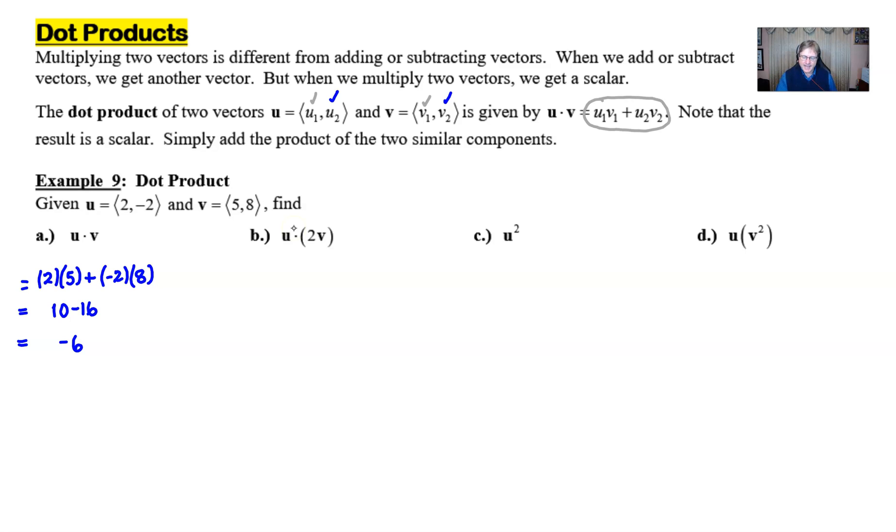Now let's take a look at part b, u dot 2v. When you've got something that's a little bit more complicated like this, I might suggest that we first of all rewrite our vector u in component form, and then just put a dot between it, and then I'm just going to multiply the scalar 2 inside to get (10, 16). Multiply the two x components together, add the result of the product of the two y components. In this case, we have 20 minus 32, which of course is negative 12.